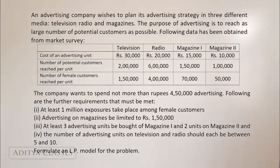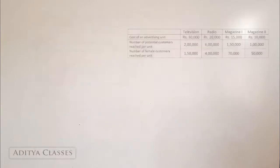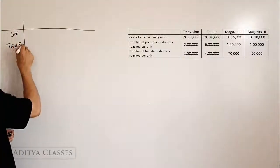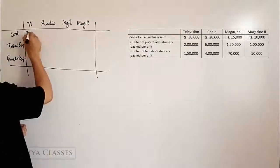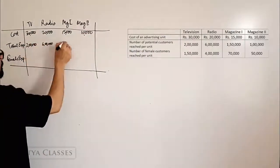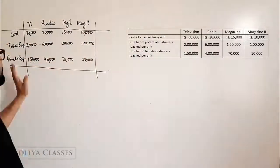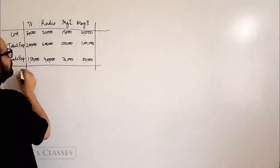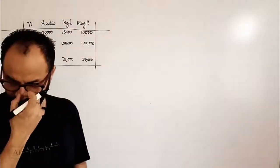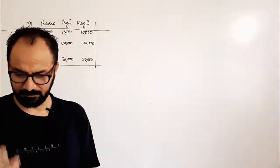This is a detailed question with a lot of constraints given outside the table as well. What we will do is make the table here and then proceed with the question. The table consists of the cost of advertising — I will put it in short, you can refer to the original. Then we will look at the additional information we have been given.